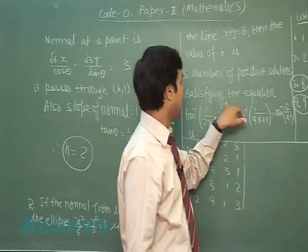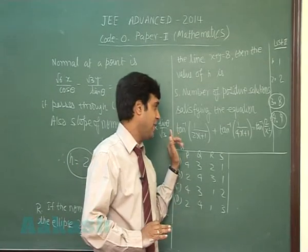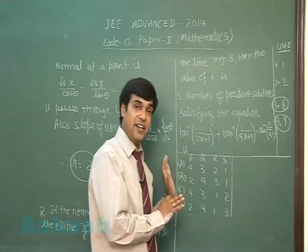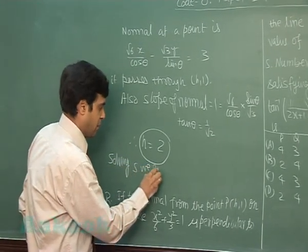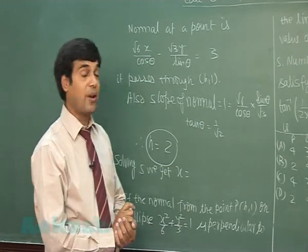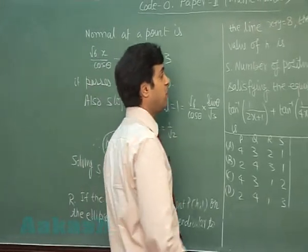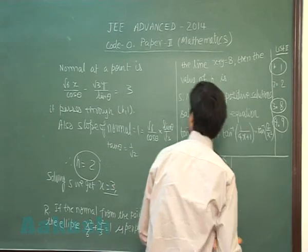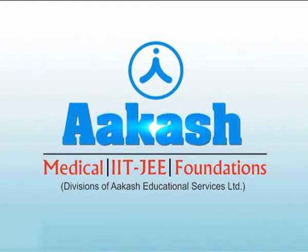Last one: find the number of positive solutions satisfying tan⁻¹(1/(2x+1)) + tan⁻¹(1/(4x+1)) = tan⁻¹(2/x²). This is a straightforward application of the tan⁻¹x + tan⁻¹y formula. Solving tan⁻¹x + tan⁻¹y = tan⁻¹(2/x²), we get a quadratic equation. Solving it gives x = 3 and one negative value, which is not required. So there is only one positive solution, and we choose A as the correct option.